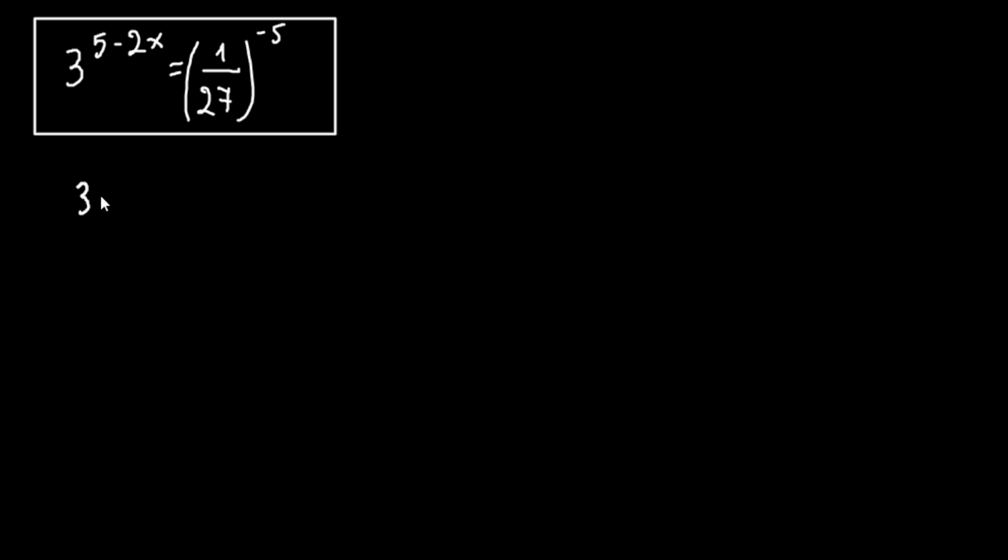First let's rewrite it. We have 3 raised to 5 minus 2x equals 1 over 27, and all of this raised to minus 5. Let's concentrate on this number and analyze it: 1 over 27, all raised to minus 5.